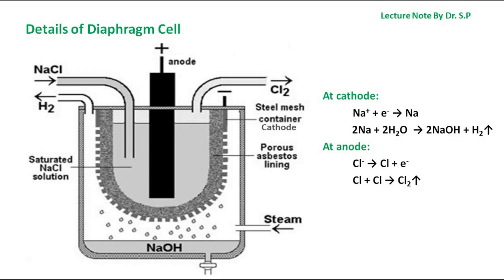When saturated brine solution is passed through the anode compartment, chlorine gas is collected at the anode and hydrogen gas is collected at the cathode, as shown in the figure. The cell consists of a perforated steel cathode lined with asbestos.